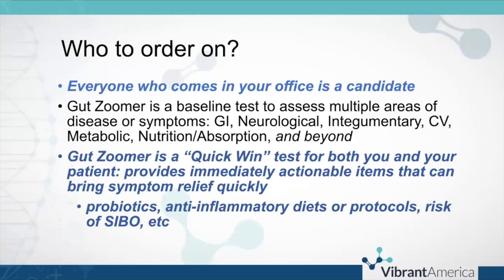Who do we order this on? This is similar to micronutrient testing — everyone who comes into your office is a candidate. Most people will have something come back abnormal on the GutZoomer. The groups to focus on include gastrointestinal patients, neurological patients given the gut-brain axis, the integumentary system for unexplainable rashes, cardiovascular due to the connection between the gut microbiome and atherosclerosis risk via endotoxin, and cardiometabolic patients — looking at obesity, the Firmicutes to Bacteroidetes ratio, and microbes that signal the immune system and can contribute to metabolic syndrome. And of course, nutrition and absorption — whether people are digesting their food and have the right bacteria to produce certain nutrients.